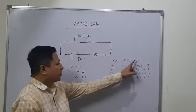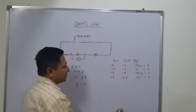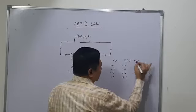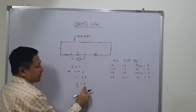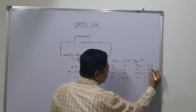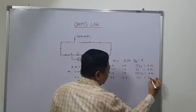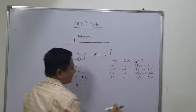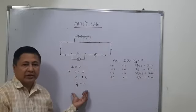So as you can see, all the ratios of V/I are constant, and that constant V/I is known as resistance. Here the resistance is 3 ohms in each case. This constant is known as resistance.